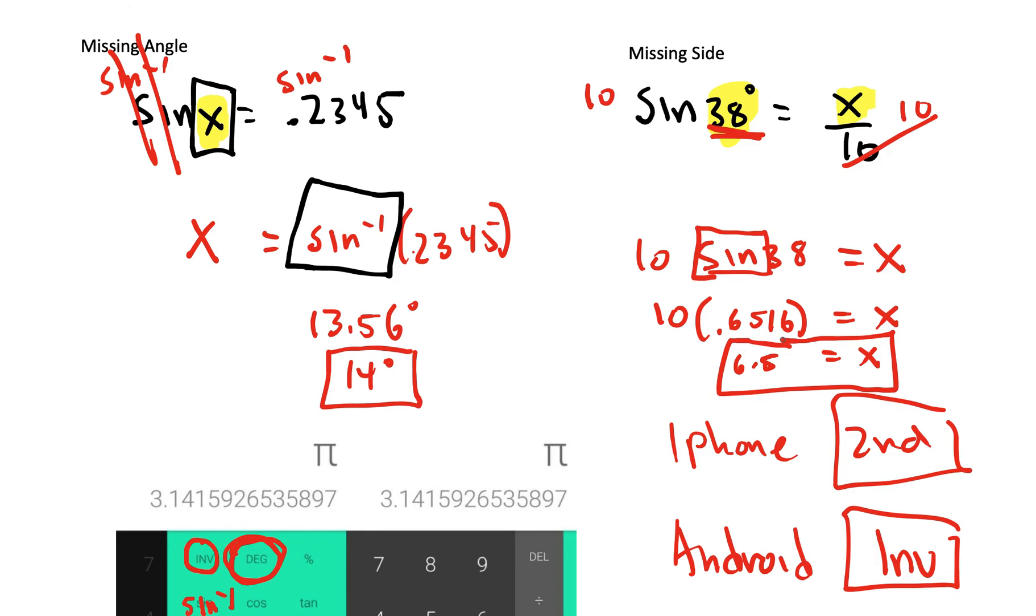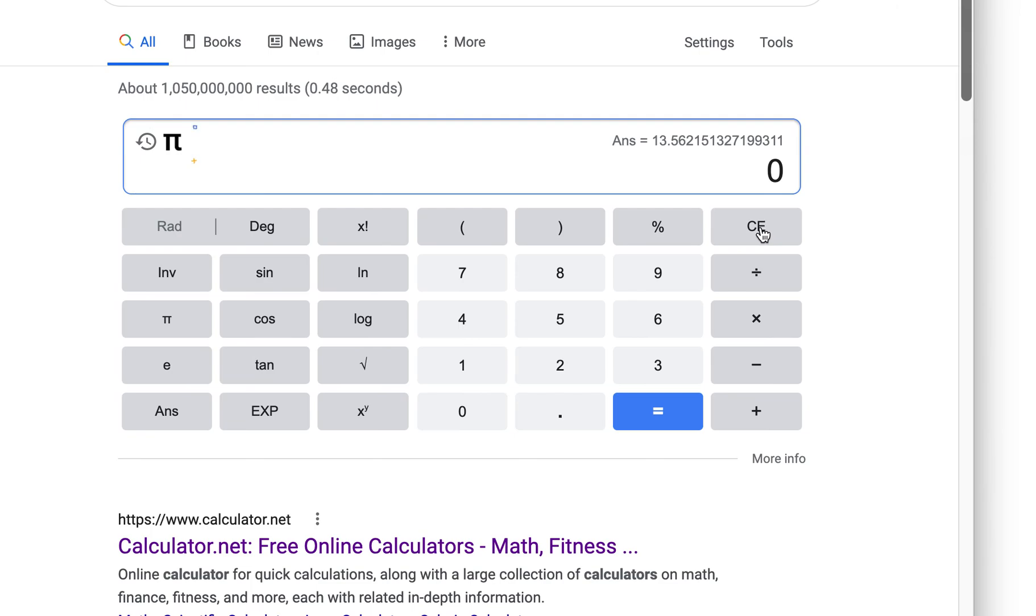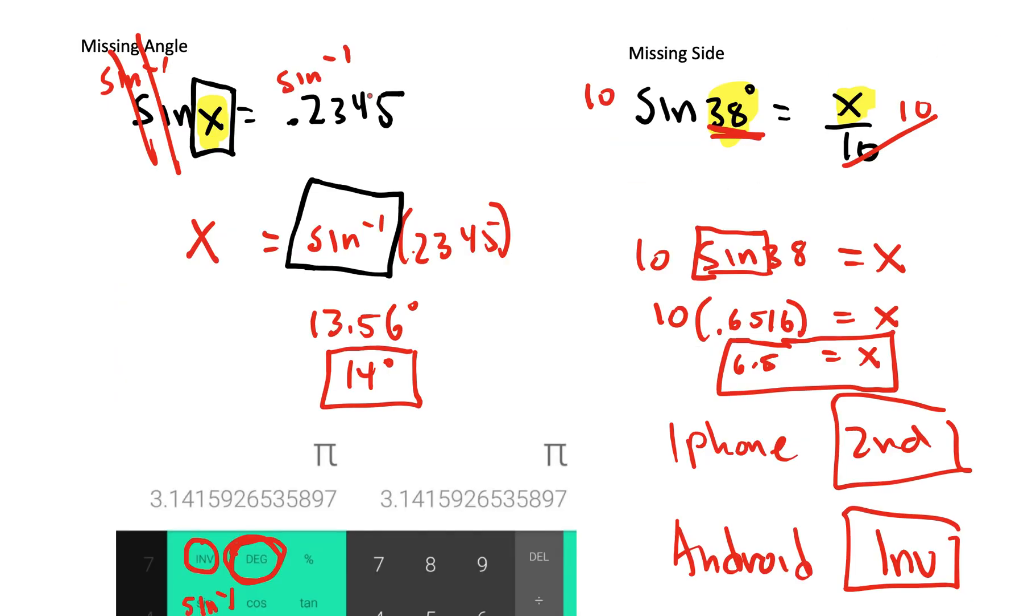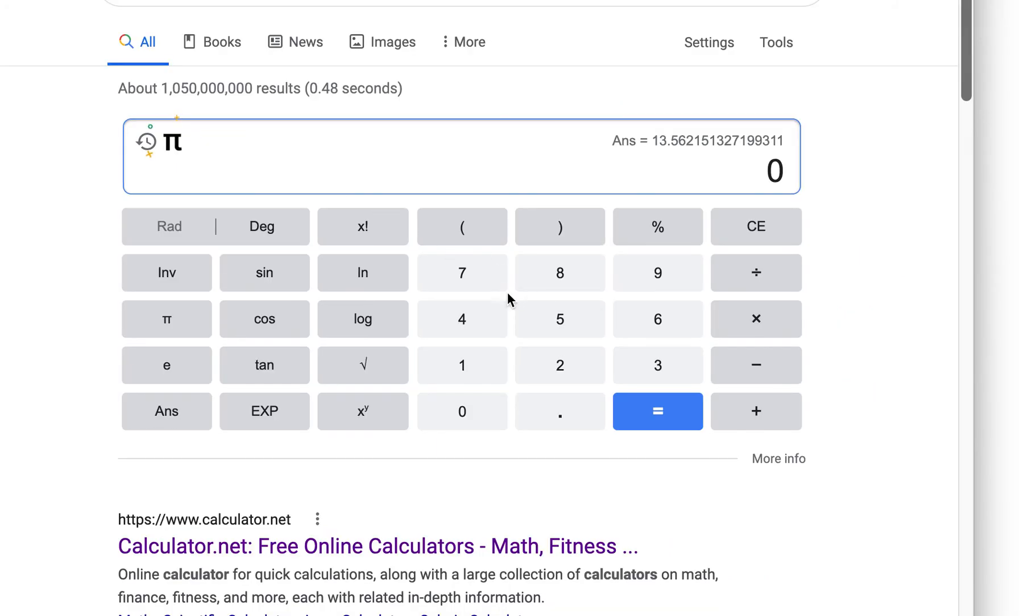So when sine was a number already, sine of 38, we don't need to push the second button. So let's see how that looks on the browser. Sine of 38 degrees. In this case, I'm going to make sure degrees are pushed. Sine of 38. And we get 0.6156. The same amount.